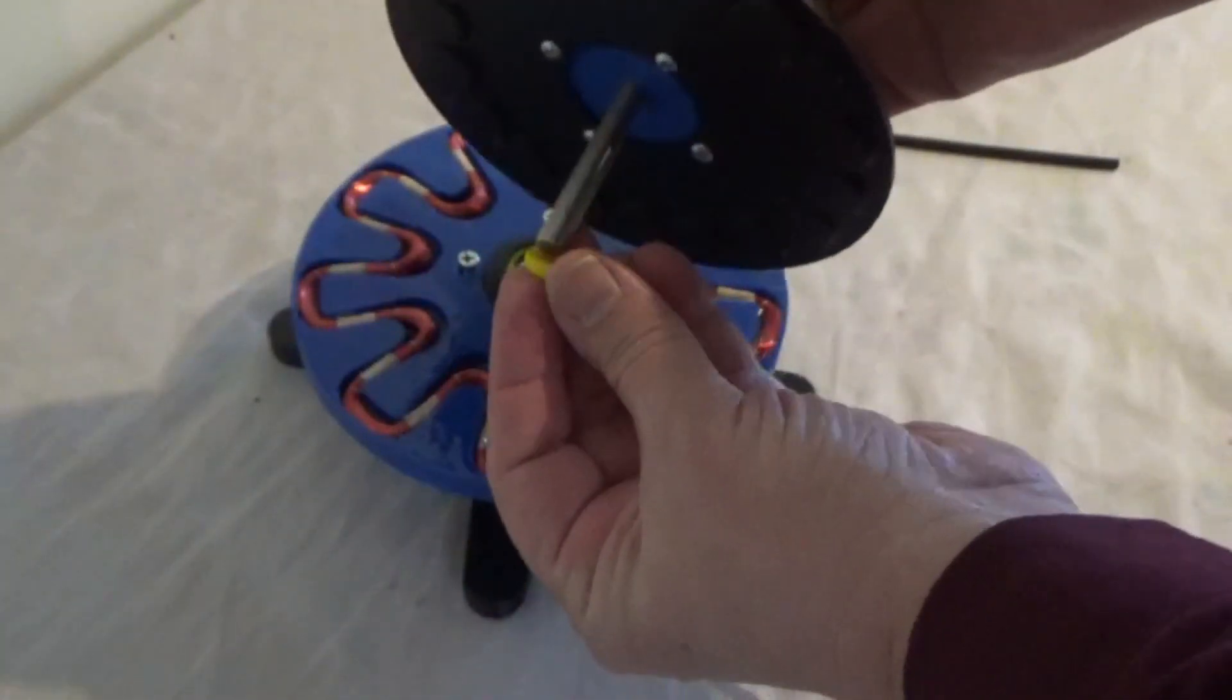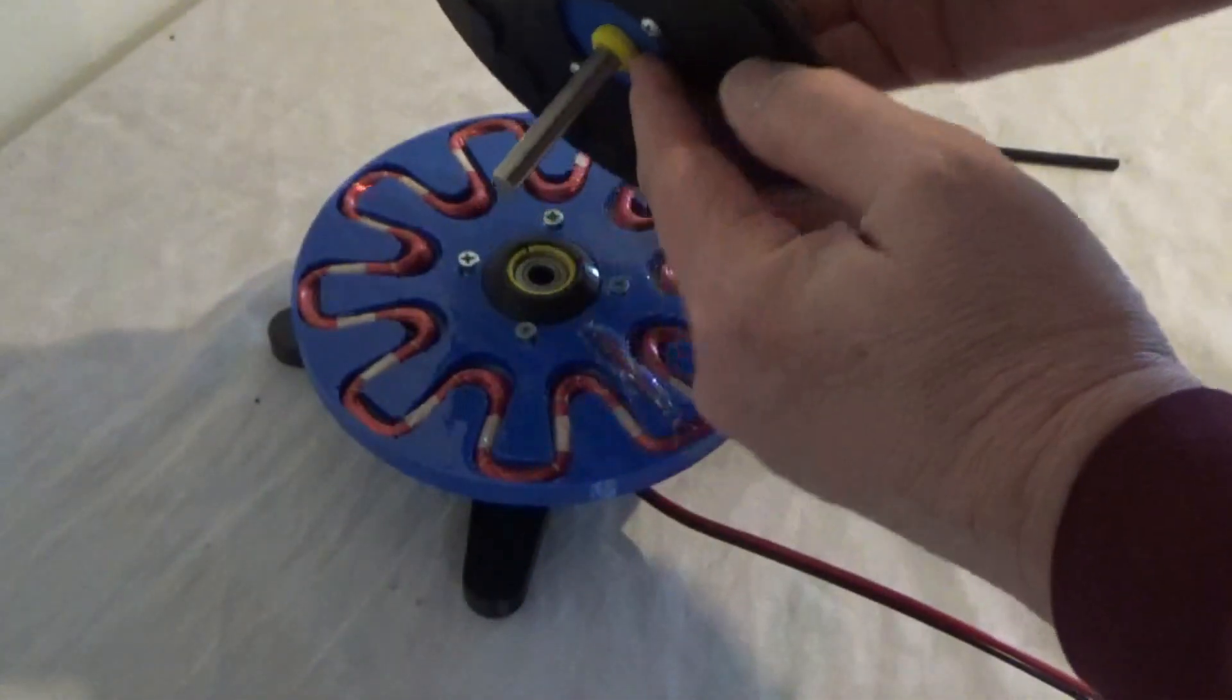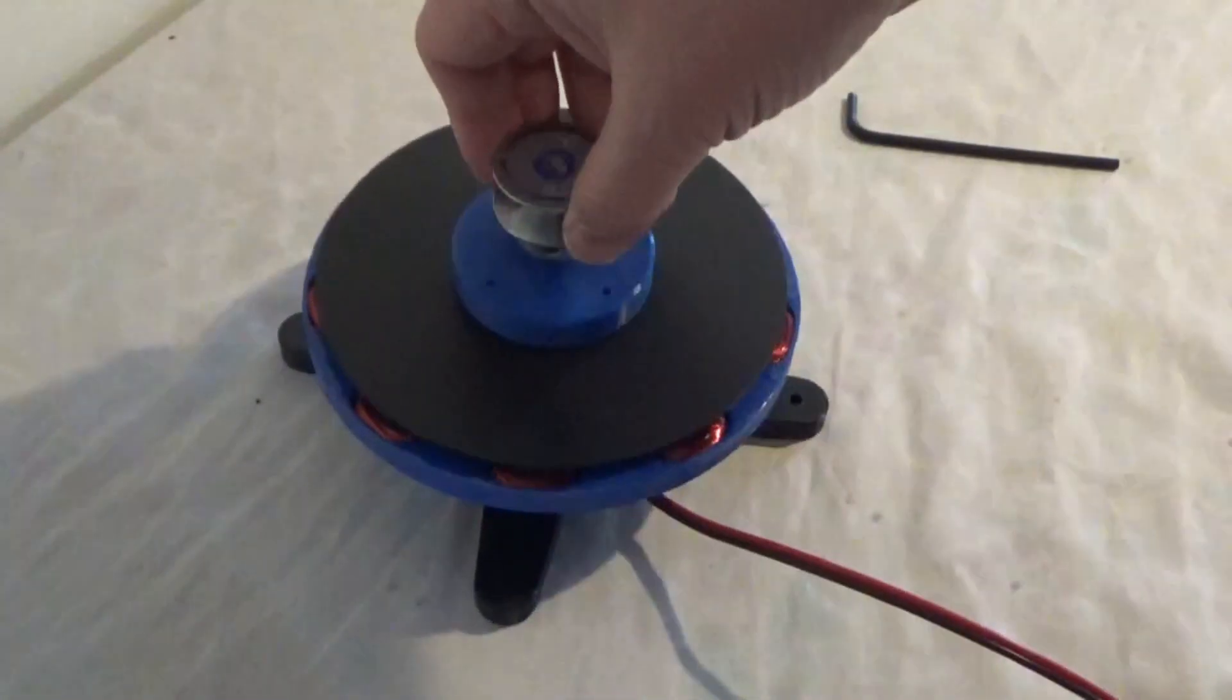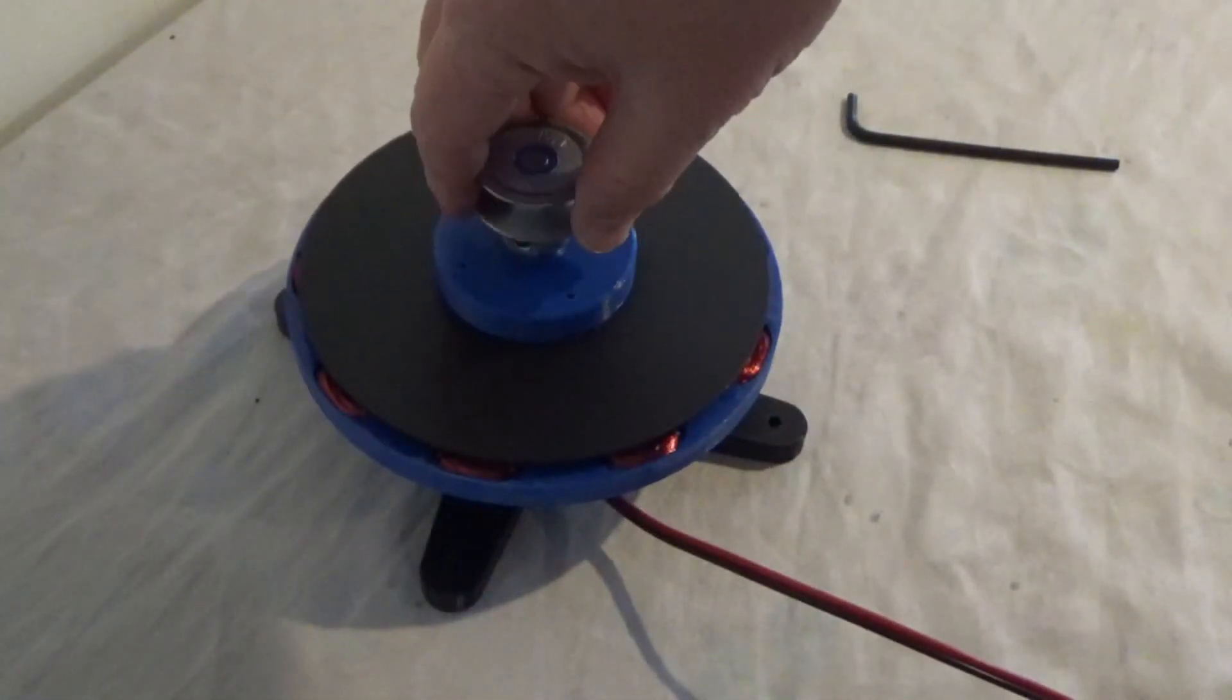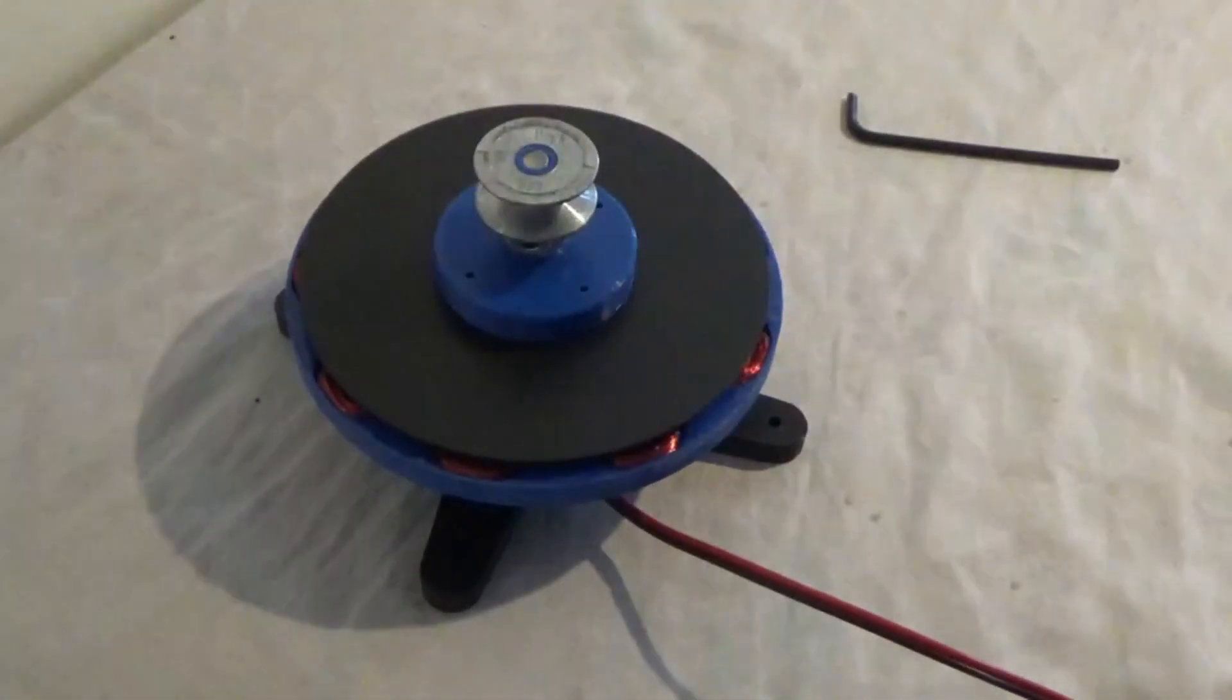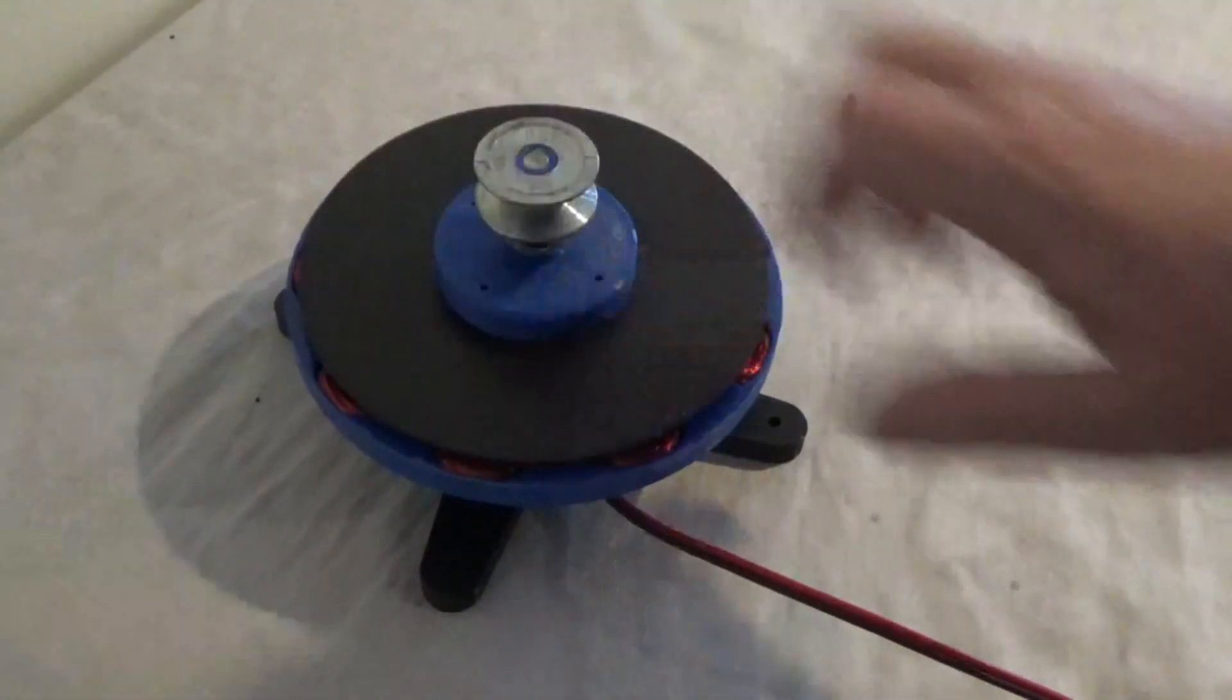Then I just take the little spacer, the bevel down. And that goes on the bearings. And I gotta tighten up those screws in there. They just attach the magnets.